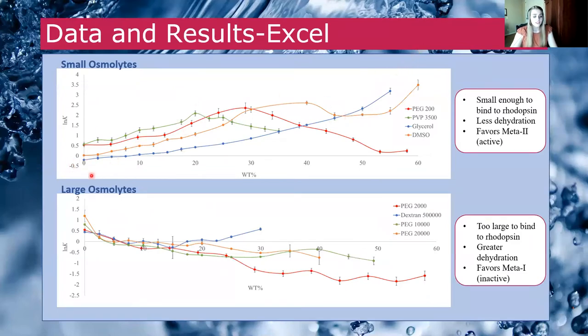However, large osmolytes favor the inactive state because they have a natural log of the equilibrium constant that is less than zero. Small osmolytes decrease osmotic pressure and dehydration via binding to rhodopsin.